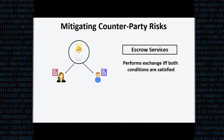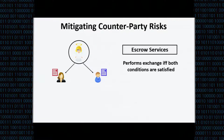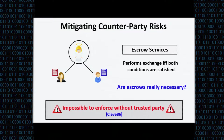One obvious way to do this is to have a trusted third party acting as the escrow service, but we don't want to trust a third party or incur those costs. So we ask: is there some protocol the two of us can run that provides the same guarantees? It turns out this actually cannot be done — this was shown by Cleve in 1986. You can't do fair exchange without a third party if you have just two parties.